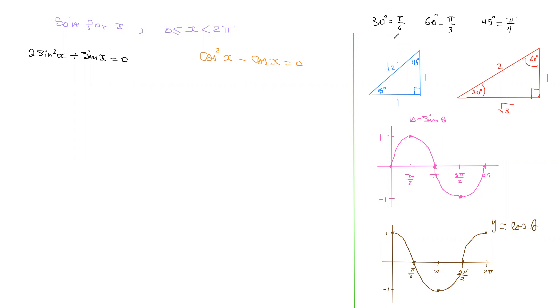60 degrees is pi over 3. 45 degrees is pi over 4. We have two special triangles here: the 45-45-90 that's 1, 1, root 2 - that's the ratio of the sides. Also the 30-60 degrees triangle is 1, root 3, 2.